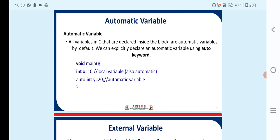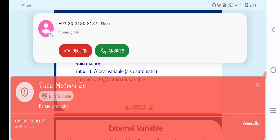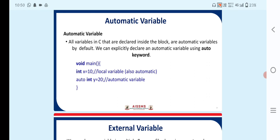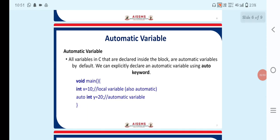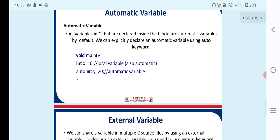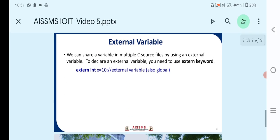In the example, int x = 10 is declared as a local variable and is also an automatic variable. Additionally, auto int y = 20 is declared as an automatic variable using the auto keyword. So we can use the auto keyword to explicitly declare automatic variables.